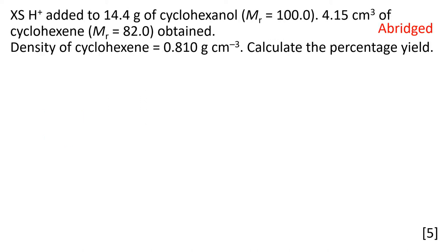Welcome back. I've just edited the question slightly to make it a little bit shorter. First off, let's start with a balanced equation. The alcohol under acidic conditions makes the alkene with water — it's a dehydration reaction.